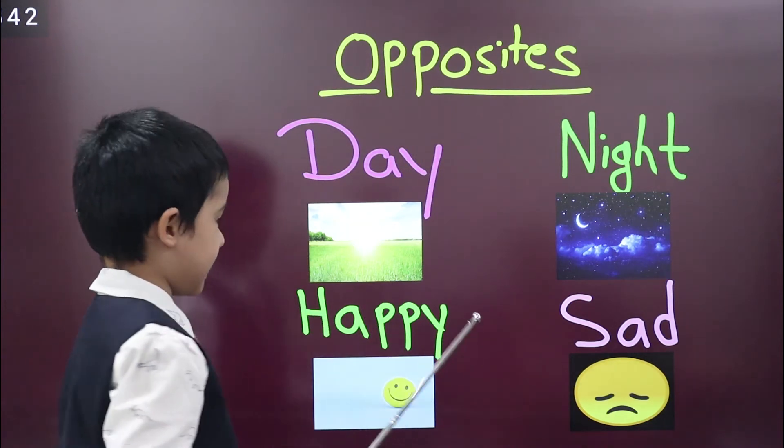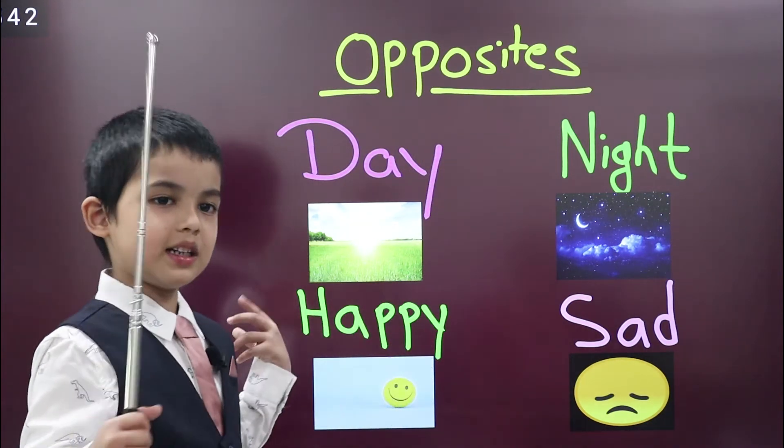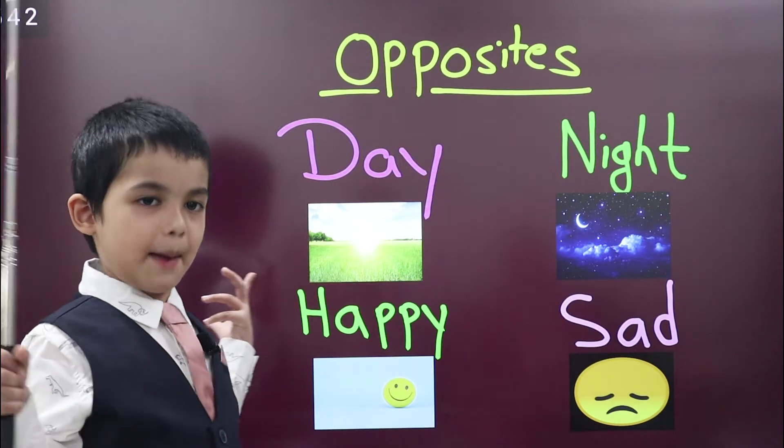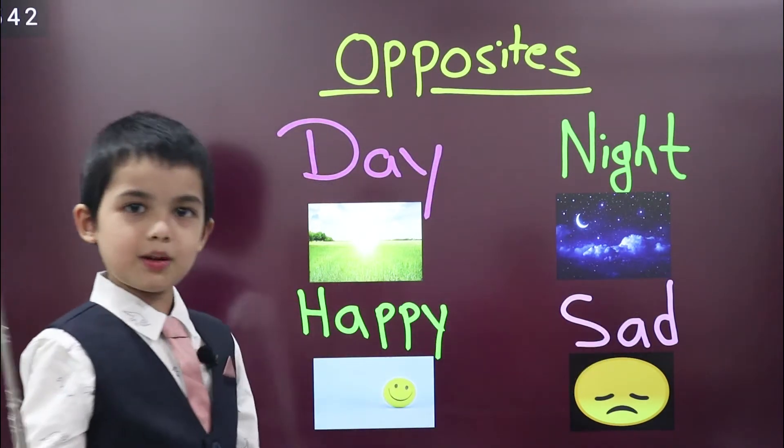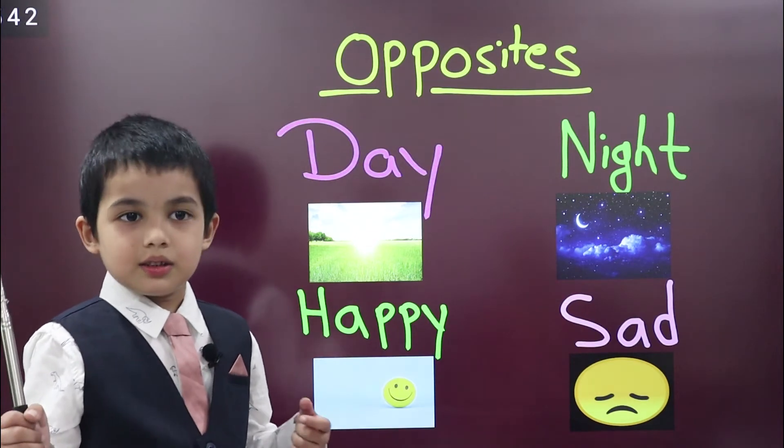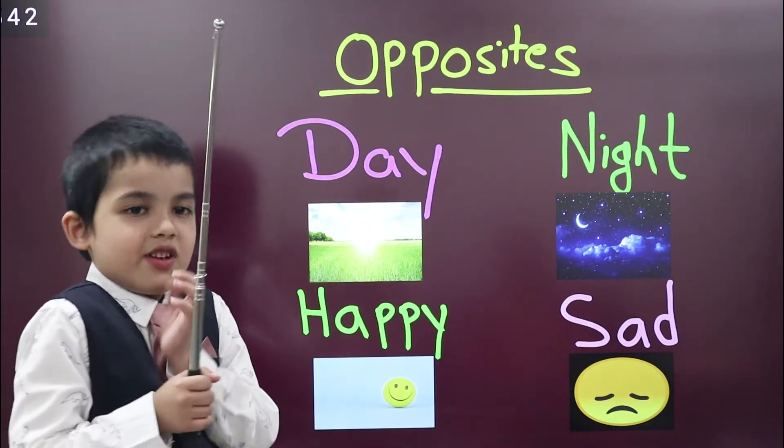This is next word, happy. When mama hugs us we feel very happy. Opposite of happy is sad. When mama beats us we feel sad.